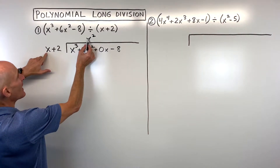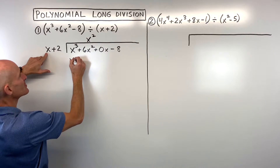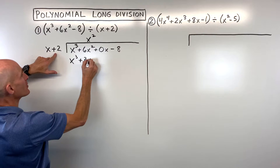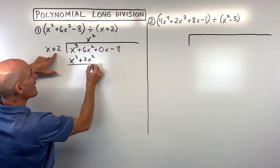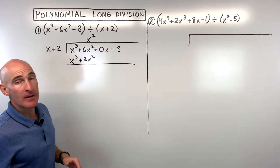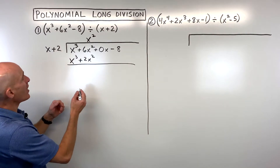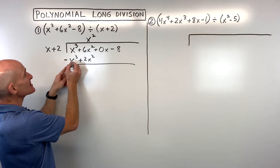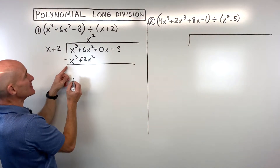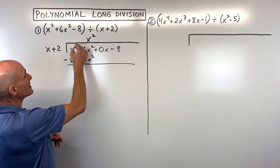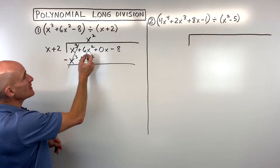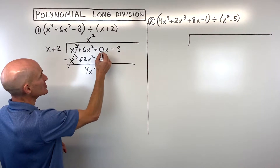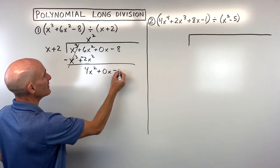Now we're going to take x squared times x, which comes out to x cubed. Also distribute x squared to the 2, that's 2x squared. Now we subtract — subtraction is the same as adding the opposite. So you can change these signs to the opposite and add straight down. The x cubes cancel one another out, and 6x squared plus negative 2x squared is 4x squared. Bring down the 0x and the negative 8.